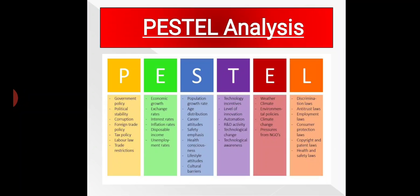T for technological, E for environmental, and L for legal factors. You can also see the list of various factors under each head of PESTEL — you can go through it for a better understanding.